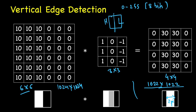The intuition is: when the filter overlaps a region with a sudden change — high values on the left and low values on the right — it adds the high values and subtracts the low values, producing a very high output. If the brightness is reversed (low on left, high on right), you get a large negative value, and you can take the absolute value. This is how vertical edges are detected.